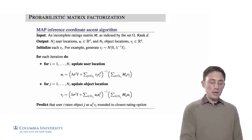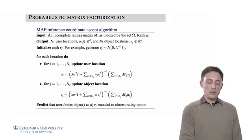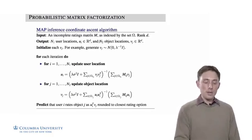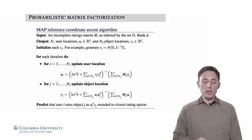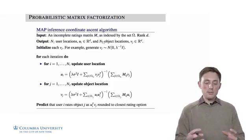The output is going to be N1 user locations, where each user is located in R^D, and N2 object locations, where each object is also located in R^D, so the same space.